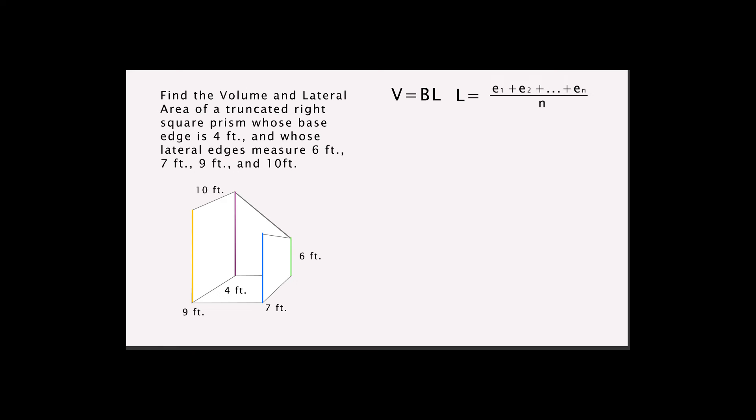We apply the formula. V equals 4 squared times 6 plus 7 plus 9 plus 10 over 4, which is equal to 16 times 8. The answer is 128 cubic feet.